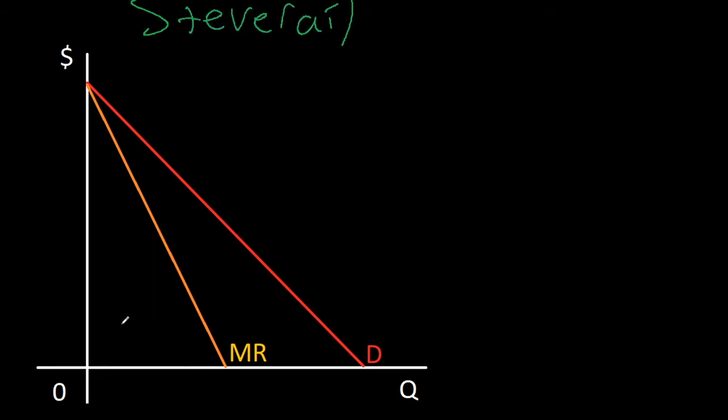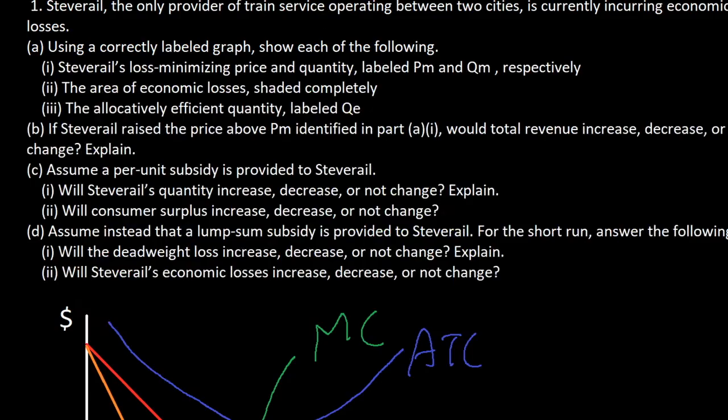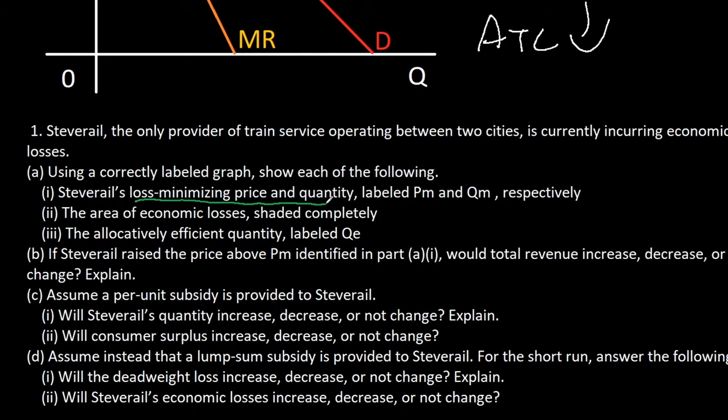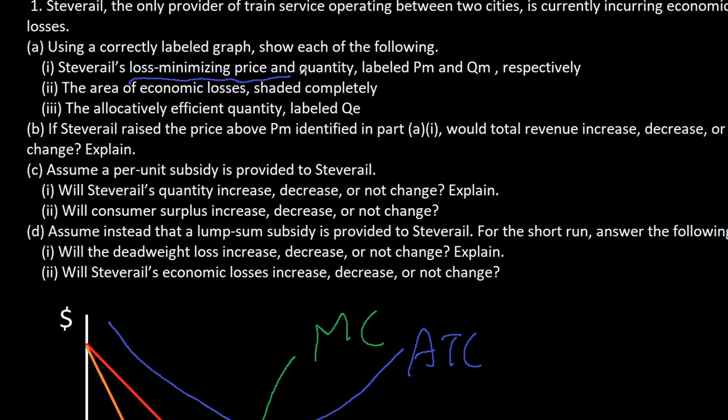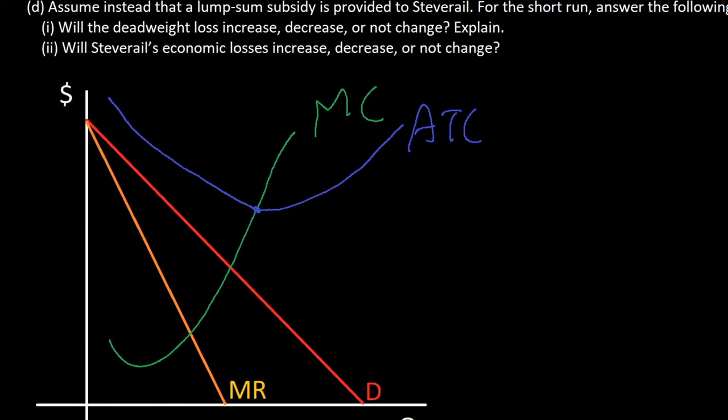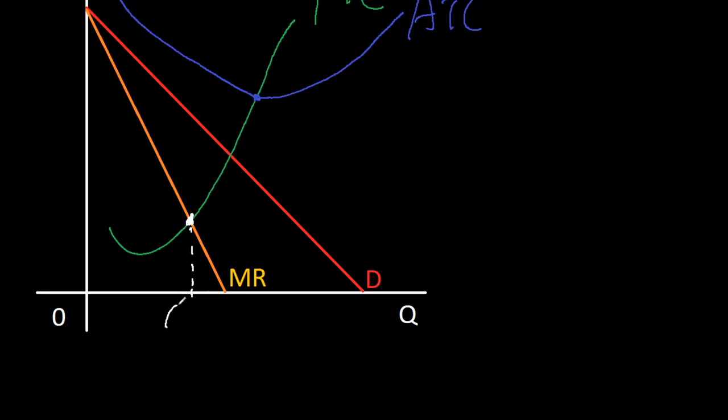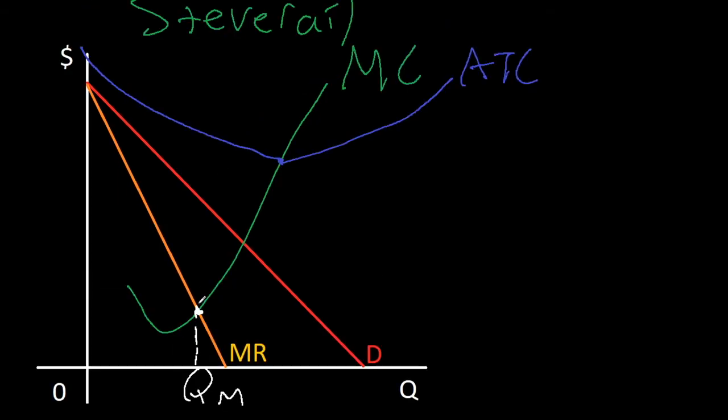For this monopoly, Steve Rail, we first need to draw in our marginal cost, a big Nike swoosh. We also need our average total cost curve, which we'll place pretty high so the firm is incurring economic losses. The question asks us to find the loss minimizing price and quantity. Where MC meets MR is both the profit maximizing and loss minimizing point. Find where MC meets MR, and here we have our quantity QM. We can also find the price by going from this quantity to the demand curve and left to the Y axis.